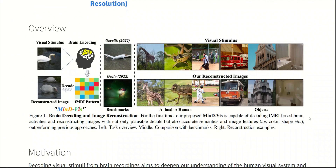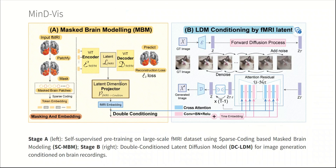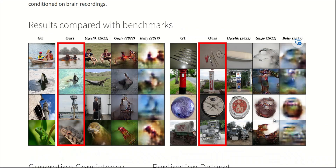The way they did that was they showed visual stimuli or images to people and then recorded their brain activity using fMRI. Using a diffusion-based model, they were able to convert these brain stimuli into visual representations and create images — which was great, and we were talking about it just a few weeks ago.